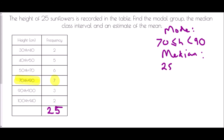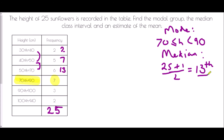For the median, there are 25 items. Adding one and halving gives us the 13th value. Making our running total: the first group has two sunflowers, two plus five takes us to seven, adding the next group gives 13 — exactly the number we were looking for. The 13th value exists in that group, so the median class interval is 50 to 70 centimeters.